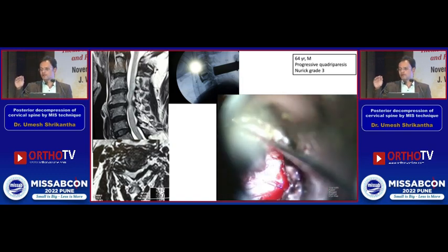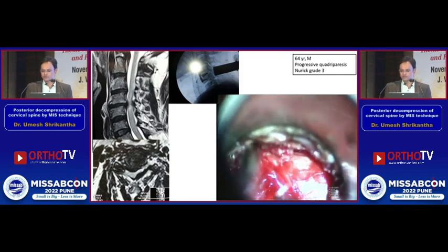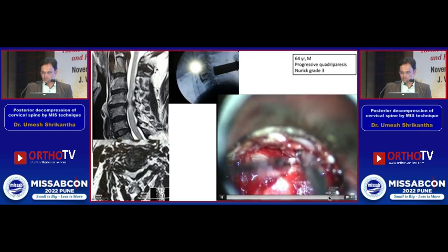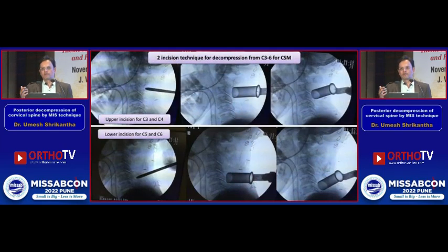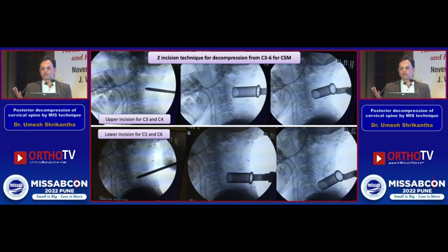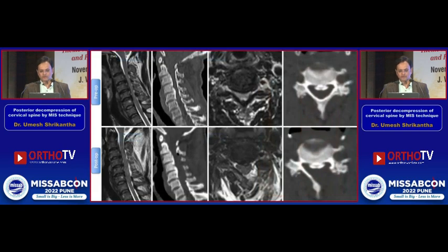We remove the ligamentum flavum, freeing it from its attachment using either a hook, forceps, or a 1 mm upcut, resulting in good decompression of the cervical spinal cord. But this was just a single level. For multi-level pathologies, we used a two-incision technique: the upper incision to decompress C3–C4 and sometimes C2, and the lower incision for C5–C6, which can also be angulated downward to decompress C7 if required. Post-operative MRI showed decent decompression of a good length of the cervical spine with both incisions.